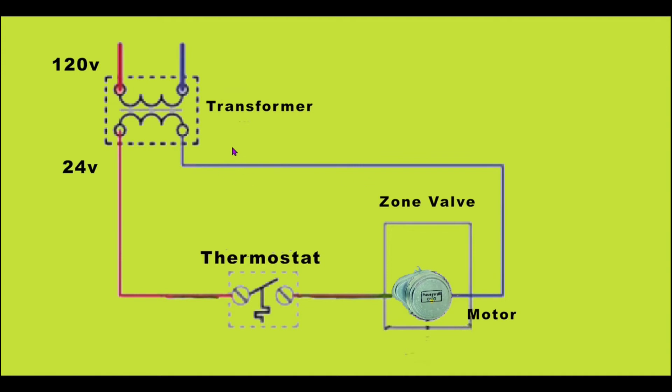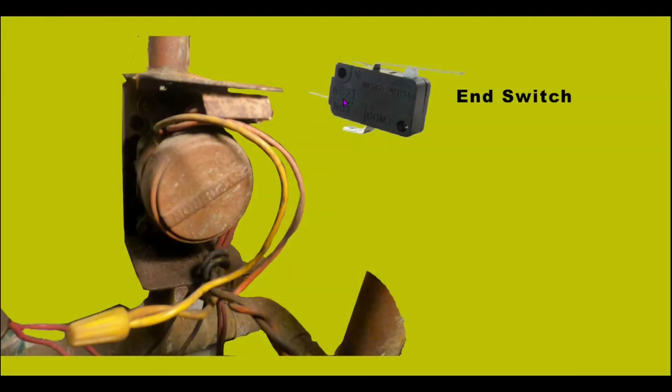Now for the other two wires, they're for this end switch. In the zone valve assembly, this end switch is nestled behind this little piece of cardboard that's up here.